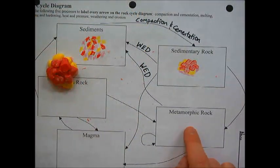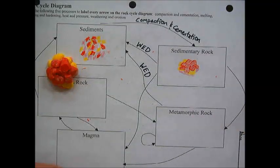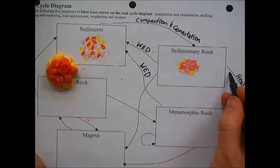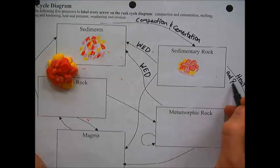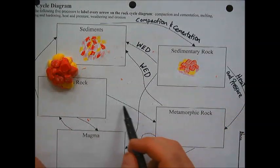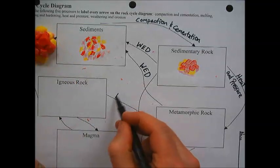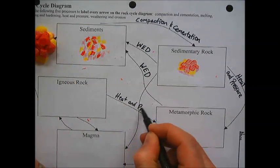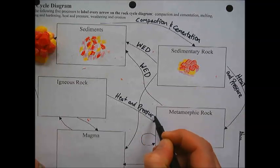Next we're going to make a metamorphic rock. For a metamorphic rock we need heat and pressure. On the arrows going to the metamorphic rock I'm going to write 'heat and pressure,' and on the one coming from igneous I'm also going to write 'heat and pressure.'